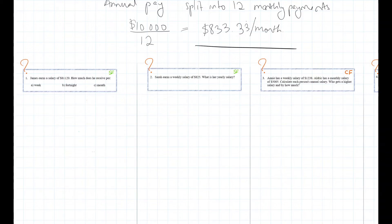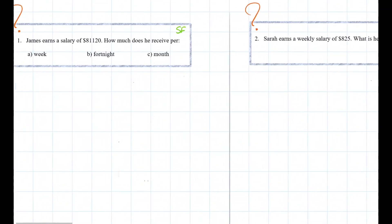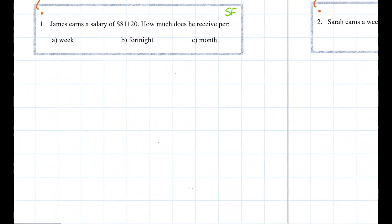So James earns, let's zoom in, James earns a salary of $81,120. How much does he receive per week? So this is an Annual Salary. So if you want to find the weekly salary, well to do that we need to do Annual Salary divided by 52 because there are 52 weeks in a year.